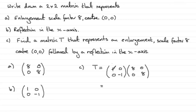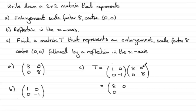So it would be 1, 0 times 8, 0 — that gives you 8. Then 1 times 8 plus 0 times 0. If we do 1, 0 times 0, 8, it would be 1 times 0 is 0 plus 0 times 8 is 0. Now we'll do 0 minus 1 times 8, 0 — so 0 times 8 is 0 and minus 1 times 0 is 0. And finally, 0 times 0 is 0 and minus 1 times 8 is minus 8. Add those two together and you get minus 8. So there's your matrix T.